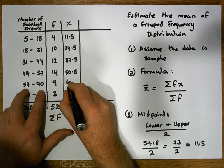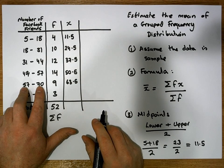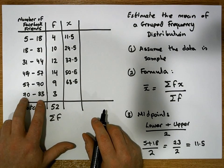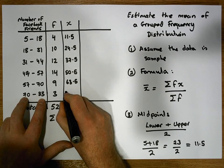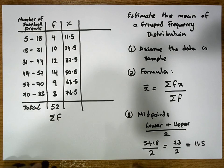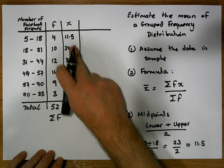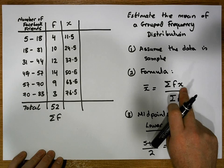The next value is 63.5, which is the lower bound plus the upper bound divided by 2. The next value is 70 + 83 divided by 2, which gives us 76.5. So now we have these midpoints of the classes, and now we can construct a column.